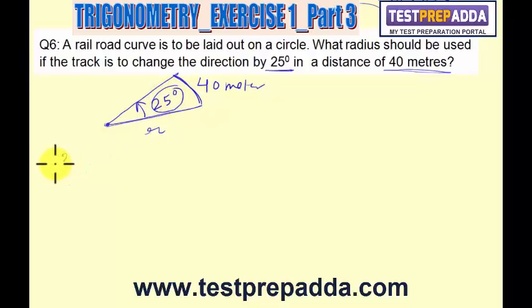So first we will convert this 25 degrees into radian angle. We know that π radian is 180 degrees, so 25 degrees will become π by 180 into 25.